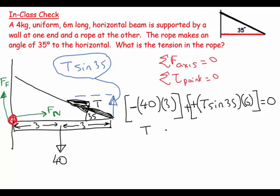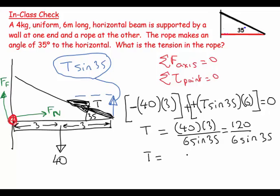So that means that T is equal to 40 times 3 over 6 sin 35, which equals 120 over 6 sin 35. So T is equal to 20 over sin 35.